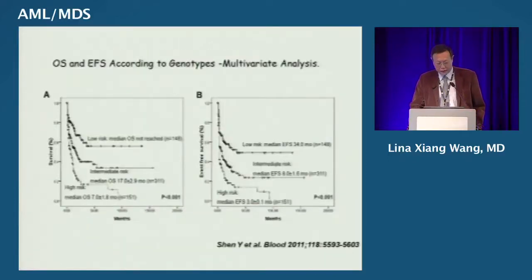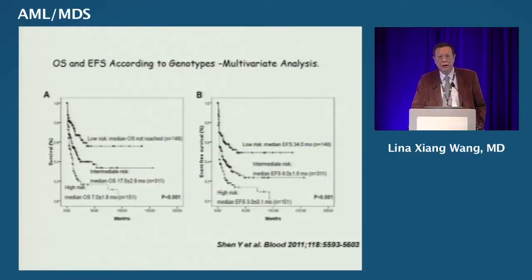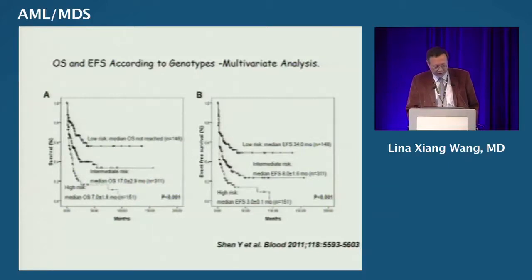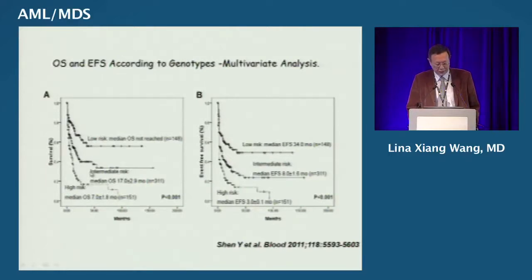According to multivariate analysis, patients can be divided into three risk categories: low risk, intermediate risk, and high risk. However, one problem we still cannot resolve is that the majority of patients remain in the intermediate risk group. Ideally, we should further divide intermediate risk patients into low and high risk subgroups, but this issue remains unresolved in the current study.